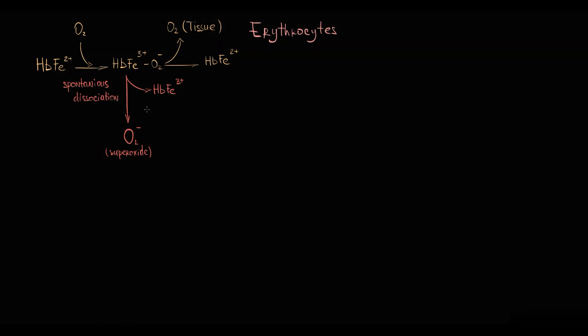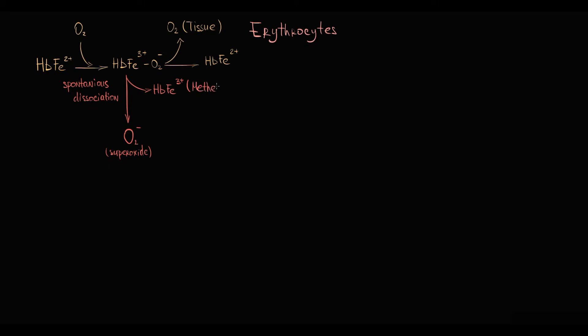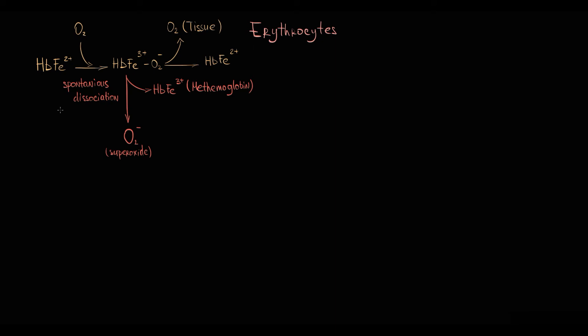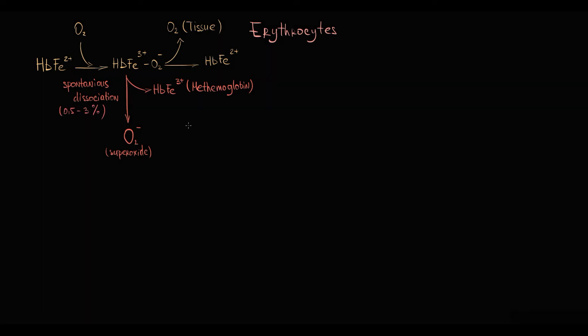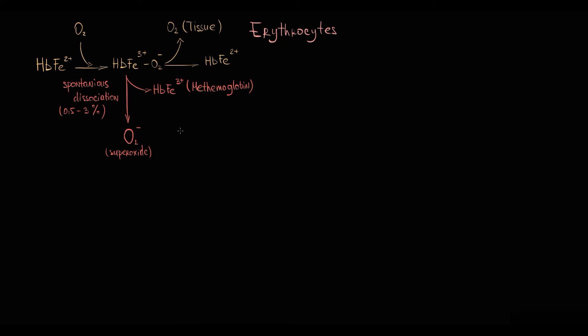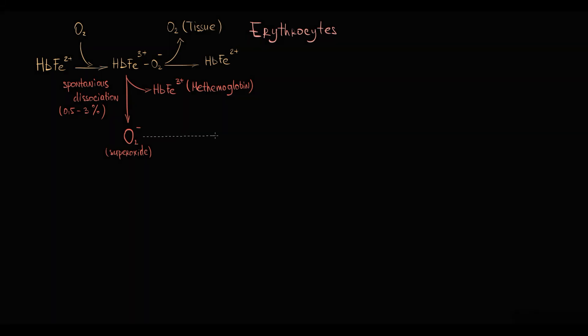Hemoglobin that has ferric iron is called methemoglobin. This spontaneous dissociation occurs even under normal conditions — the routine daily rate of hemoglobin-to-methemoglobin conversion is roughly 0.5–3% of the total hemoglobin pool per day. Because of this spontaneous generation of superoxide, erythrocytes are always at risk of oxidative injury. With constant production of reactive oxygen species, erythrocytes must provide constant elimination of reactive oxygen species.